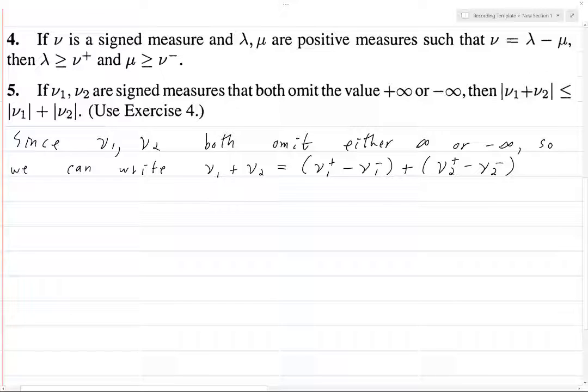So now that we have this, we rearrange, and so we get ν₁⁺ plus ν₂⁺, and we subtract ν₁⁻ plus ν₂⁻. Now we're going to define this to be λ minus μ. So λ is a positive measure that's just this, and μ is a positive measure that's just this.